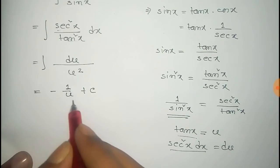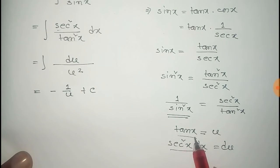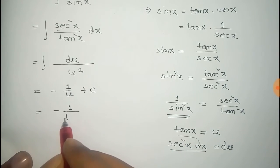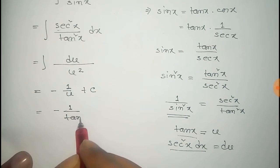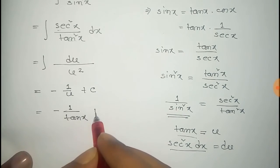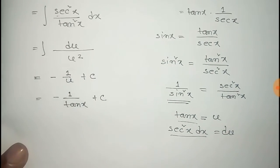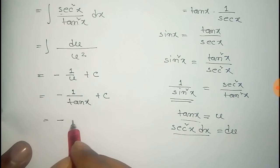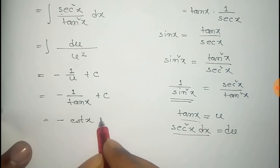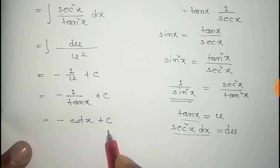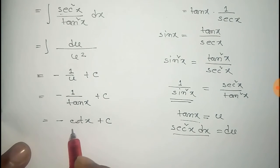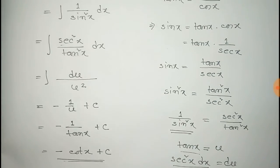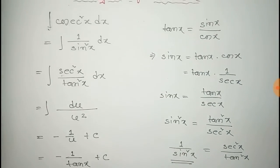Now put the value of u back as tan x. So that is minus 1 by tan x plus constant c. Thus, minus 1 by tan x equals minus cot x plus c. Thus we get the integral of cosecant squared x dx equals minus cot x plus c.